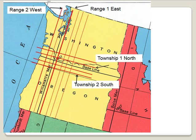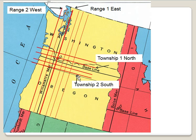To complete the grid system, a series of township lines were created north and south of the baseline. Six miles north of the baseline is township one north, six miles north of that is township two north, and six miles south of the baseline is township one south. They were able to grid out each baseline and meridian area with townships running north and south of the baseline and ranges running east and west of the meridian.